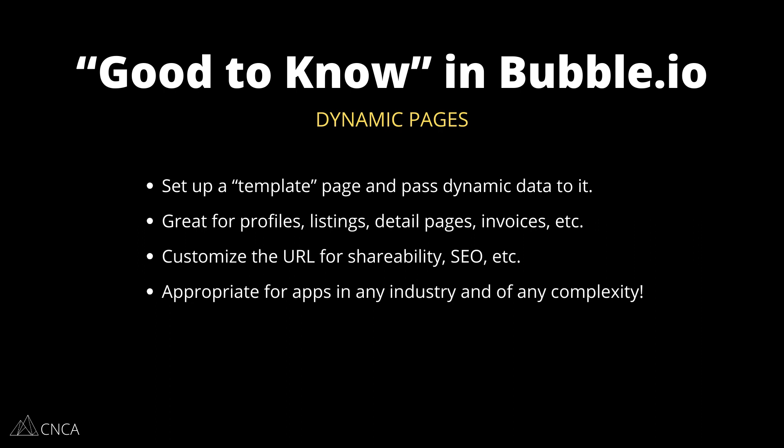Bubble has the capability to create dynamic pages — an essential feature that most data-driven interactive apps are going to need. An example of a dynamic page is like a profile page. Imagine you're looking up a listing for a business in a directory. When you select the listing from your search results, you're taken to a new page to see all the details about that business. If you go back and select a different business, you're taken to the same page format but the data has changed. In development, you're really just designing one page — a template.